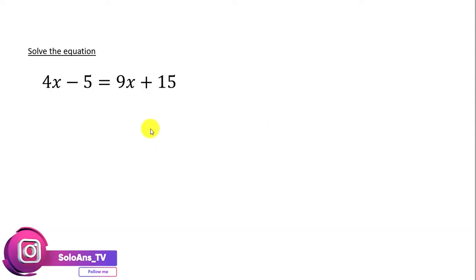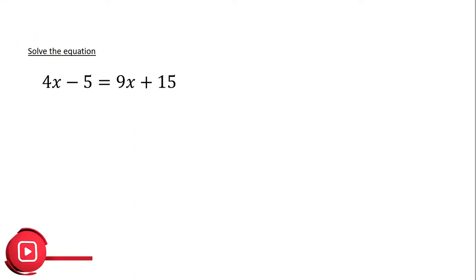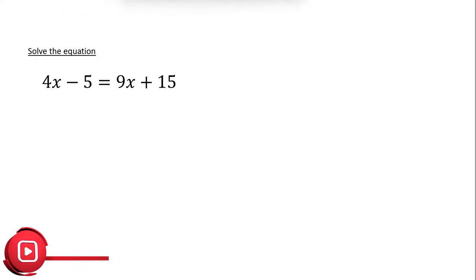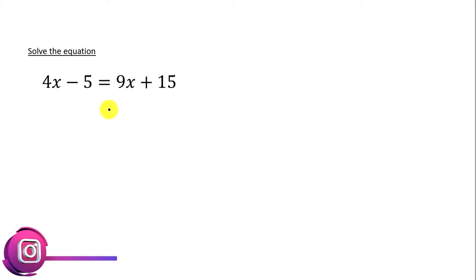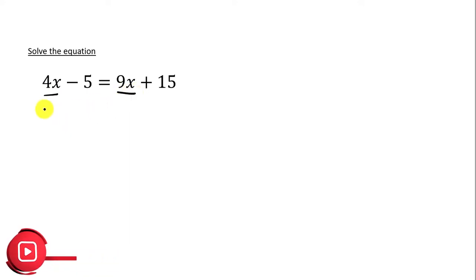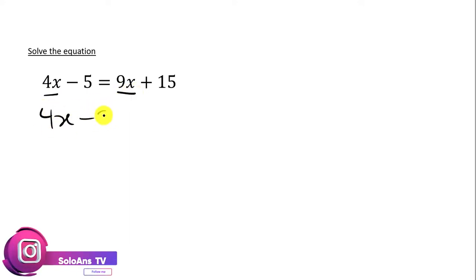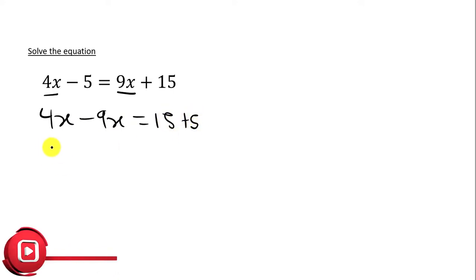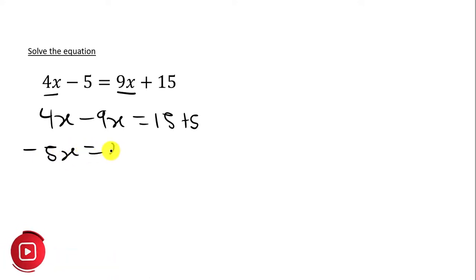We have our first question. Let's try solving this manually and then see what we get before we try using the calculator. So assuming we are solving this question, all that we have to do is group like terms — we have 4x here and another 9x here. So we are going to have 4x minus 9x, which will be equal to 15 plus 5. This gives us minus 5x is equal to 20.